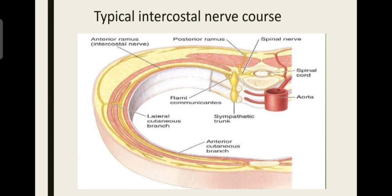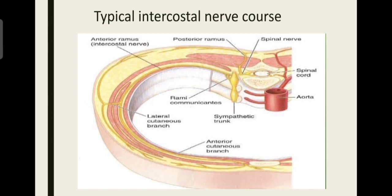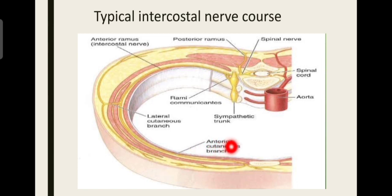Let us see the course of the typical intercostal nerve. First, it emerges from the intervertebral foramen, then passes anteriorly slightly and then laterally to be in the costal groove. It then travels along the costal groove, and when reaching anteriorly, it passes posterior to the internal thoracic artery — called the internal thoracic artery. It then travels along the costal groove and emerges through the anterior intercostal membrane, giving the anterior cutaneous branch that supplies the anterior part of the thoracic cavity.